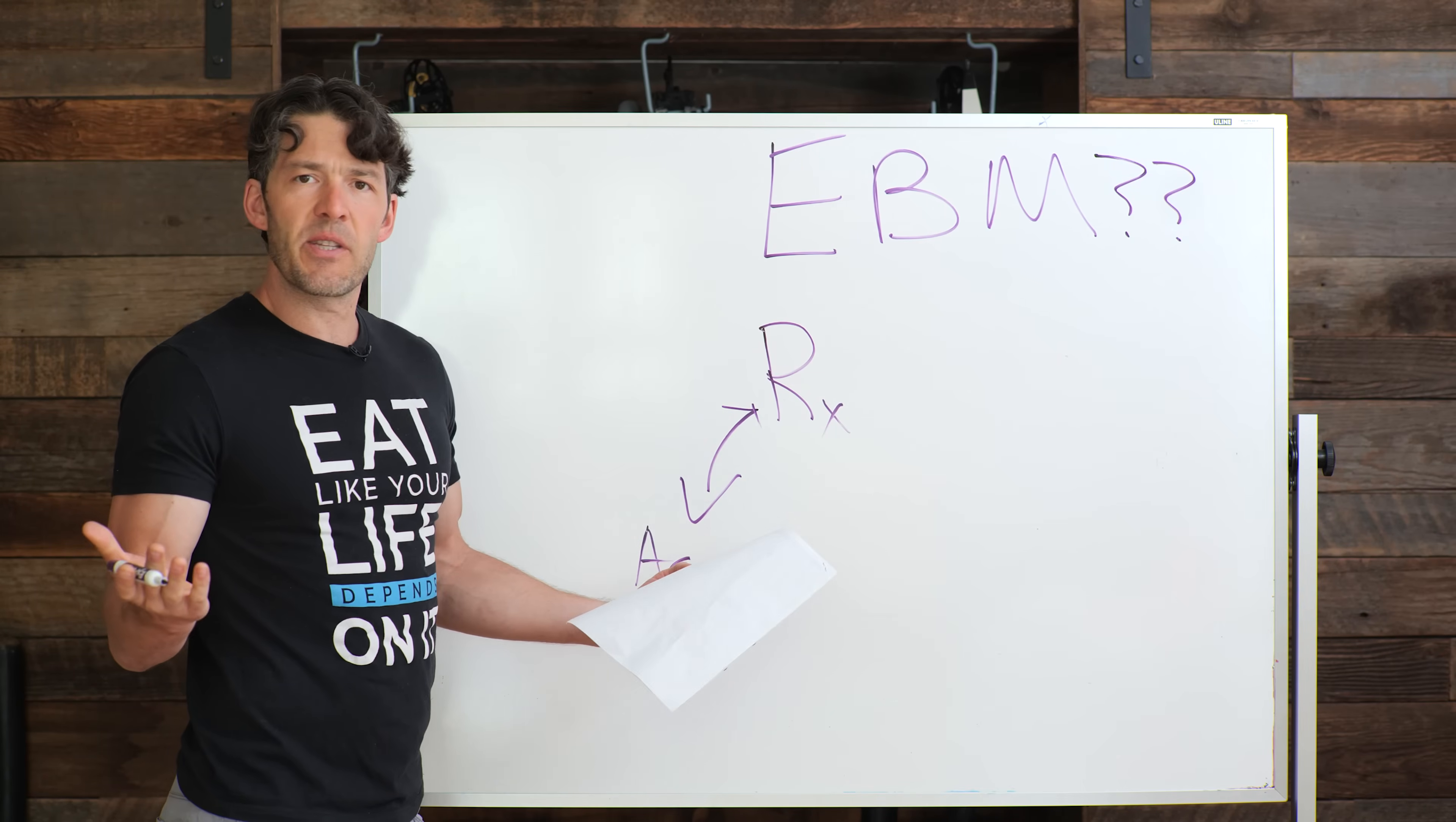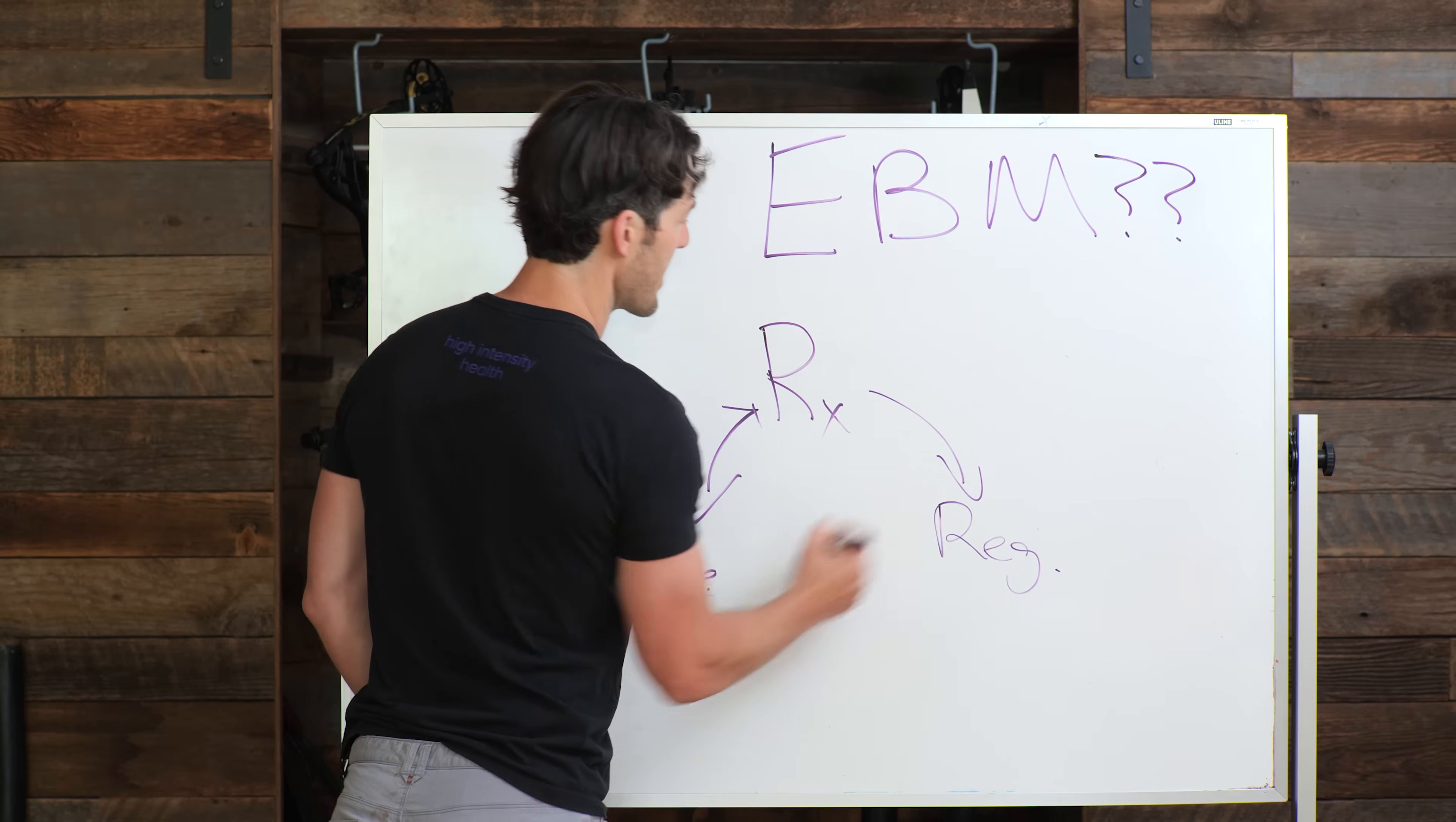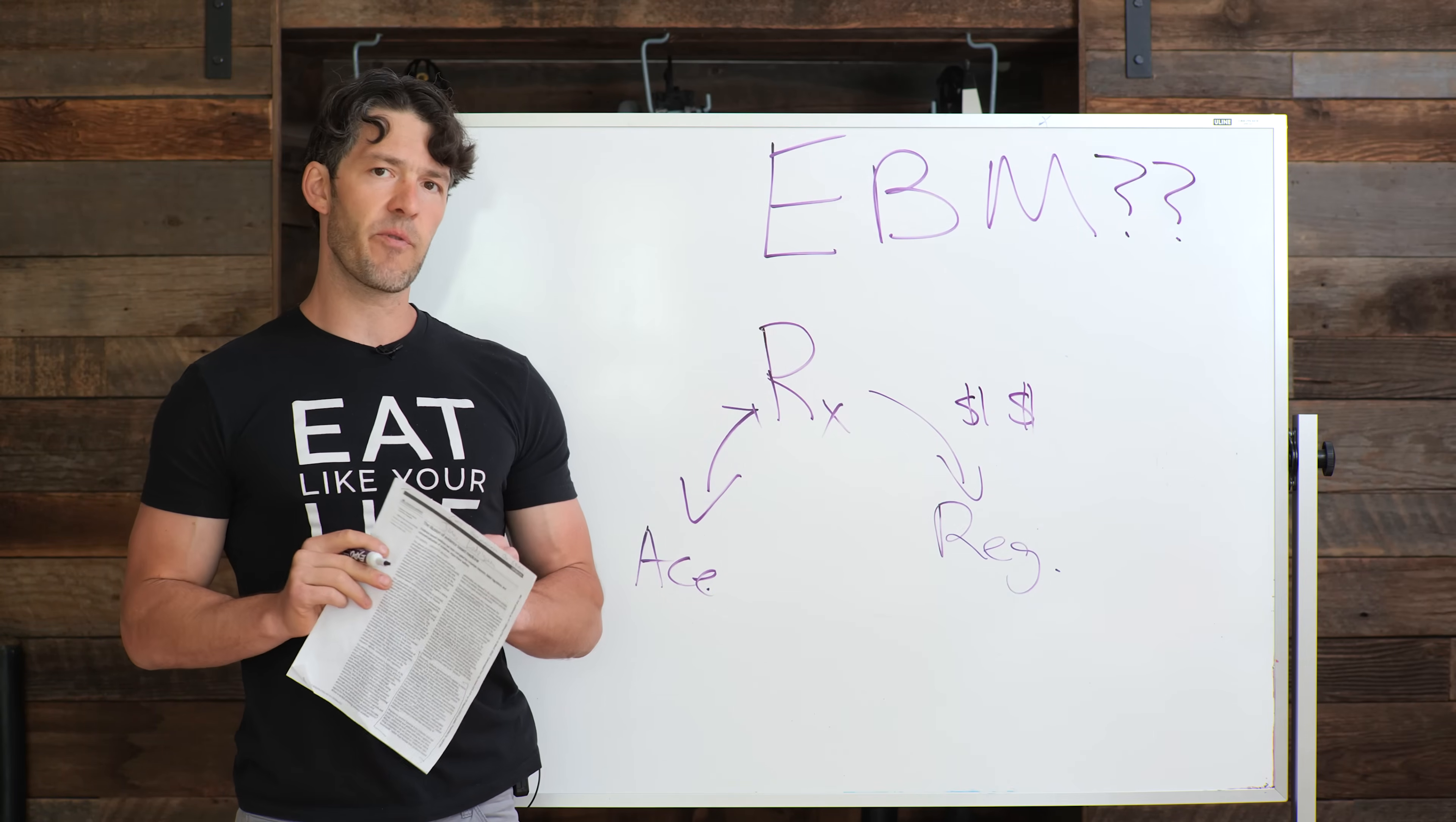You might say, well, that's not that big of a deal, Mike, because we have the FDA. We have regulatory bodies. Well, here's the problem. So I'm just going to put reg here. Guess what? This is a bi-directional system as well. We have the drug companies are paying the regulatory bodies. So can you see just a little bit of a conflict here?